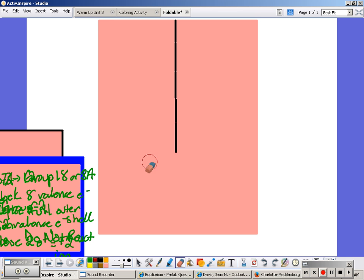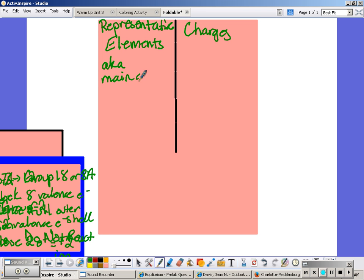We're going to title it representative elements. So representative elements are also known as main group elements and it's any element in the S and P block. So that would include hydrogen and aluminum.